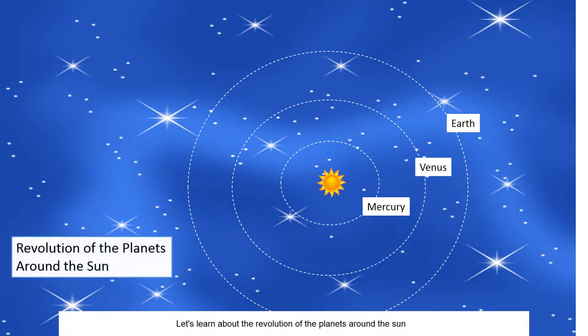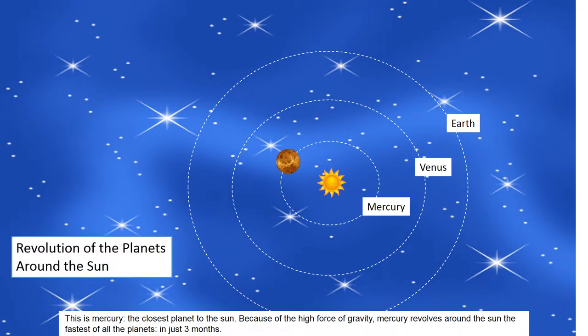Let's learn about the revolution of the planets around the Sun. This is Mercury, the closest planet to the Sun. Because of the high force of gravity, Mercury revolves around the Sun the fastest of all the planets in just three months.